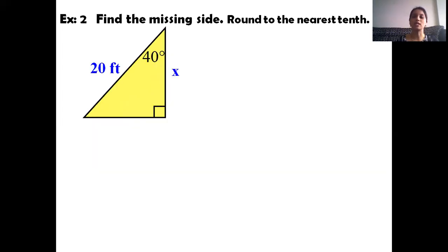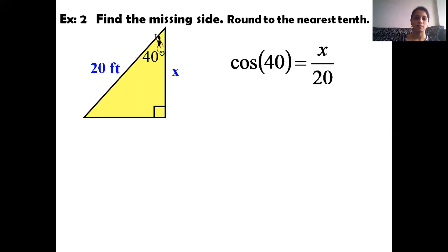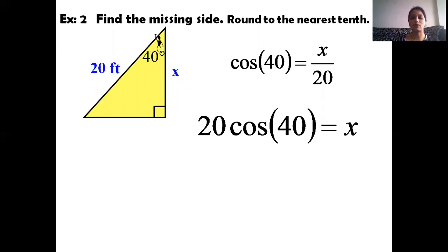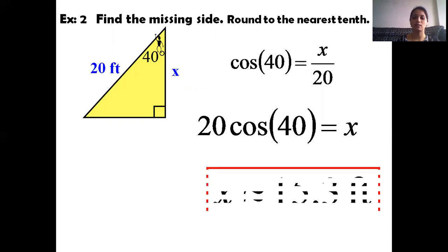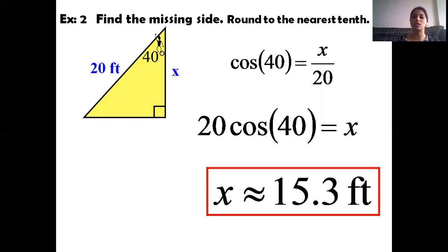Example number two: find the missing side rounded to the nearest tenth. In this figure, the angle is 40 degrees, the hypotenuse is 20 feet, and the adjacent side is x. Using cos A equals adjacent over hypotenuse, cos 40 equals x divided by 20. By cross multiplication, x equals 20 times cos 40, therefore x equals 15.3 feet.